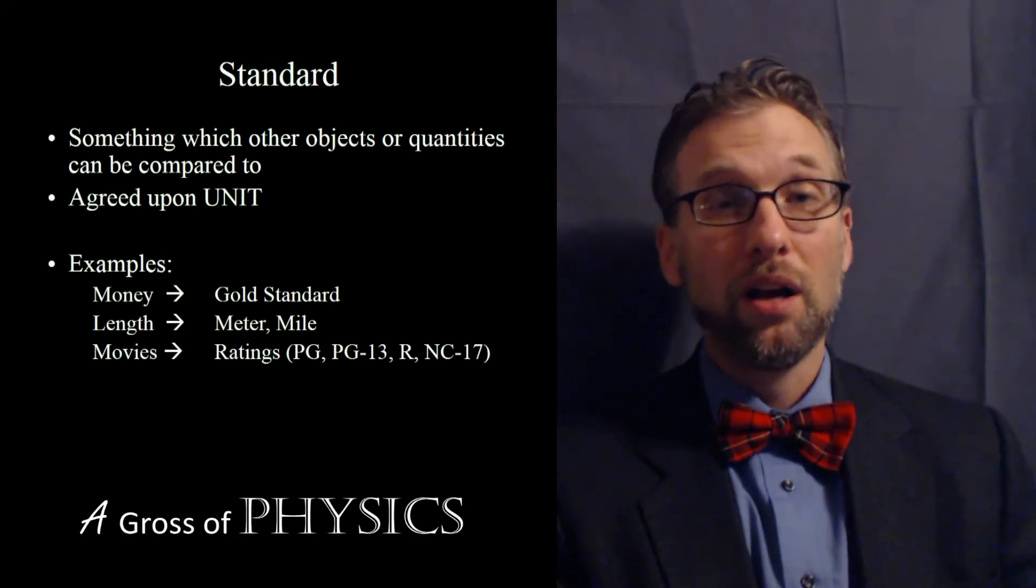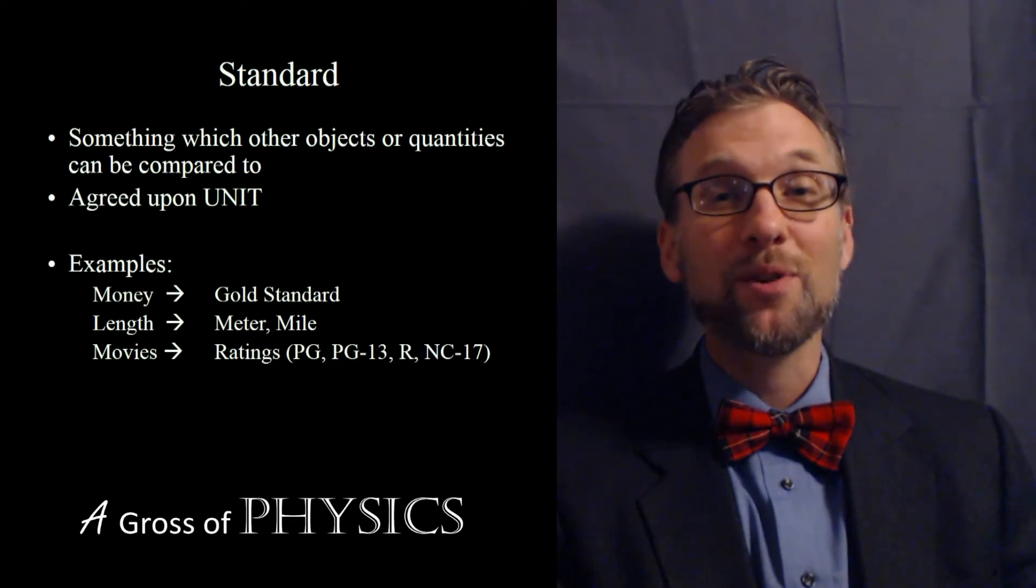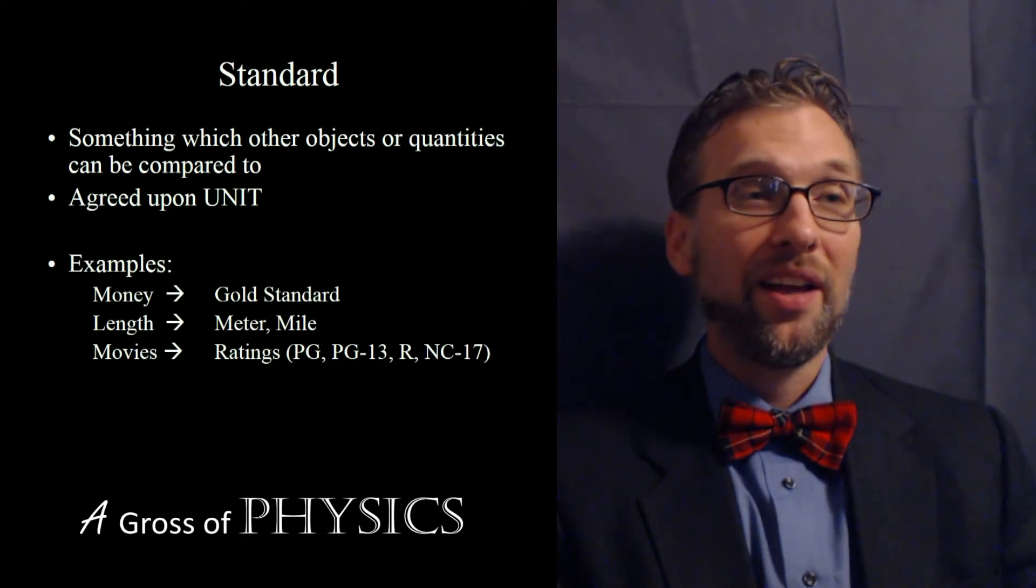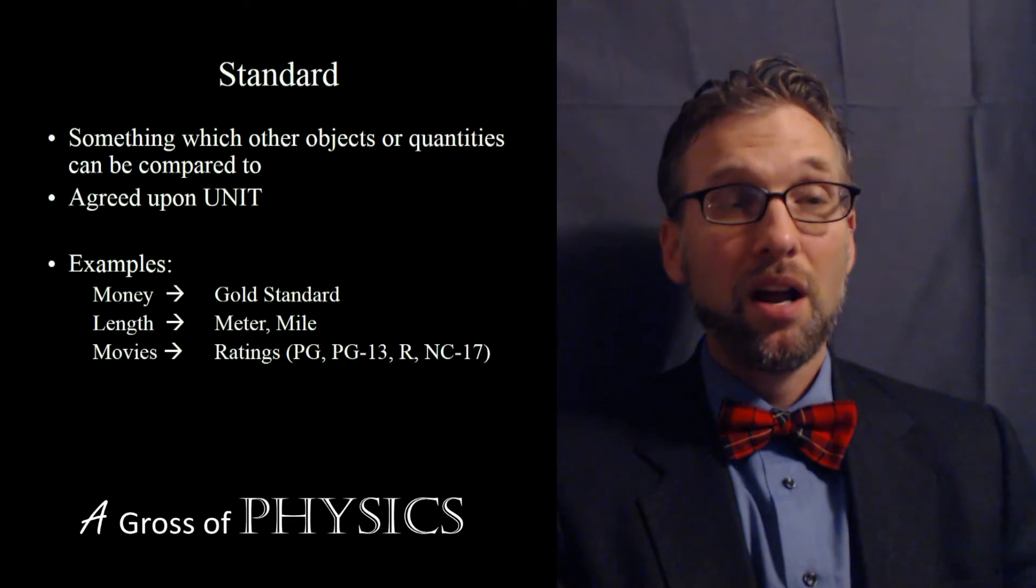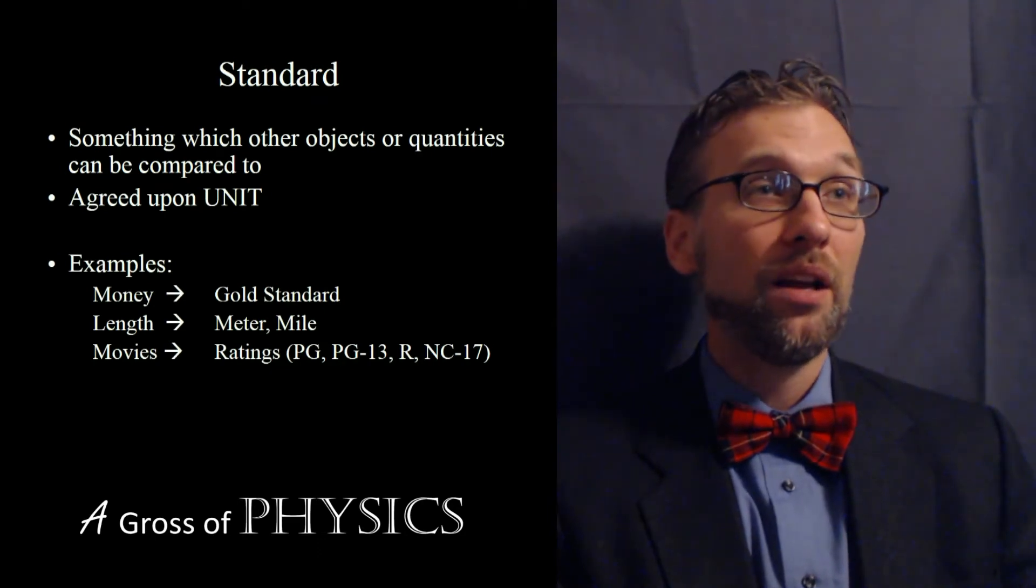Many cars have both the miles per hour and kilometers per hour listed right on the dashboard. So that's important to realize, that 70 kilometers per hour is different than 70 miles per hour. And if you try to drive 70 miles per hour in Canada, you might get pulled over and be issued a ticket.